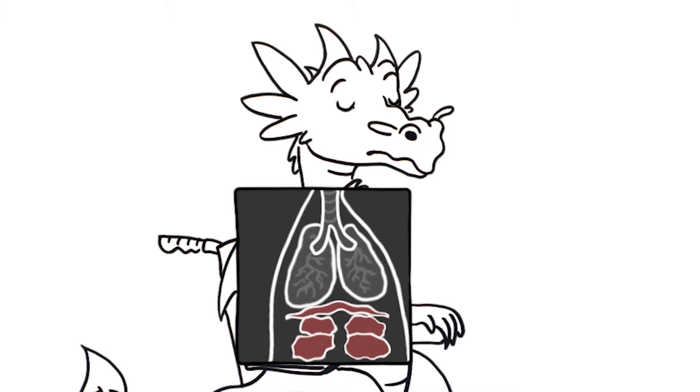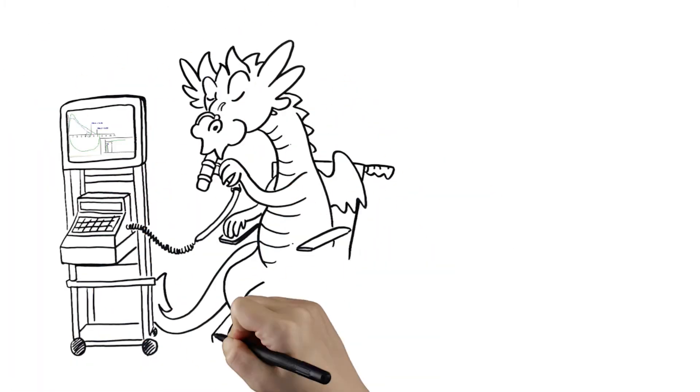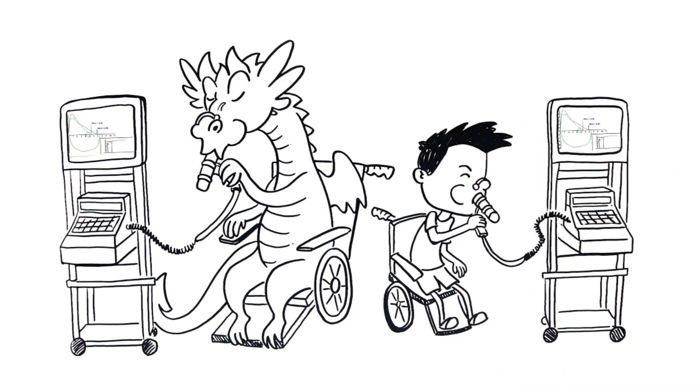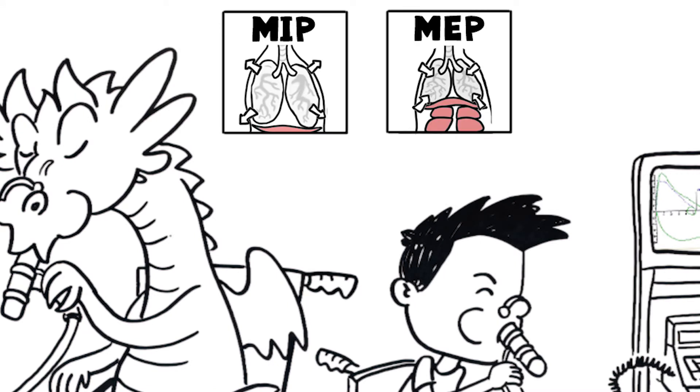The vocal cords will continue to work well. Pulmonary function tests, or PFTs, can measure the strength of the muscles used to breathe in by measuring the maximal inspiratory pressure (MIP). PFTs can also measure the strength of the muscles used to breathe out by measuring the maximal expiratory pressure (MEP).